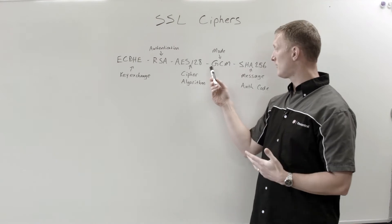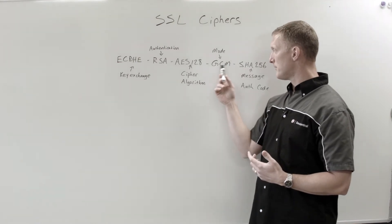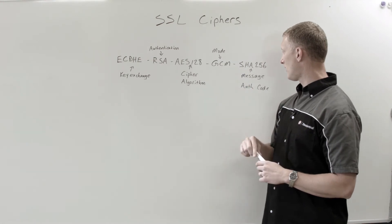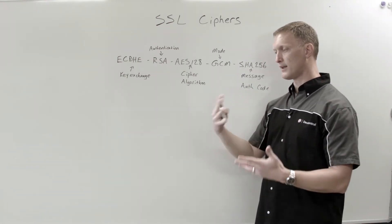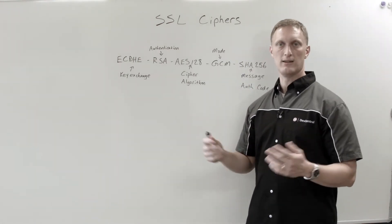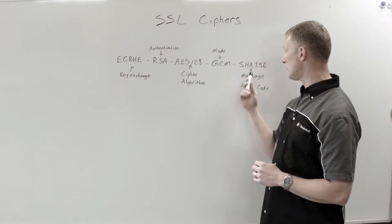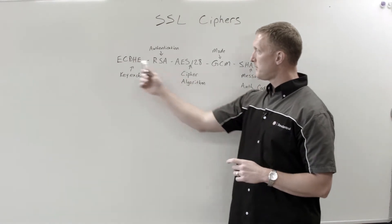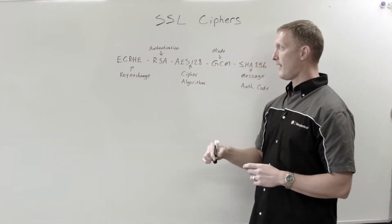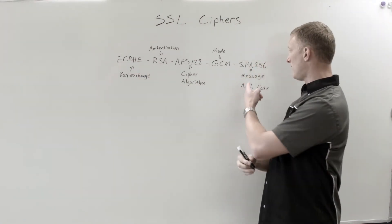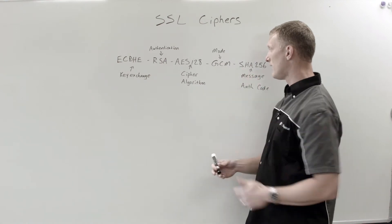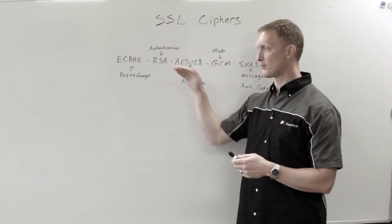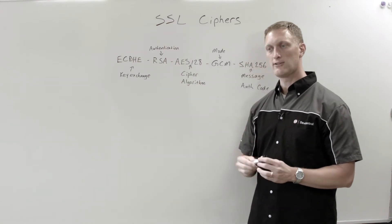Then there's a mode — 'GCM' is Galois/Counter Mode; the mode may also be listed in the cipher name. Then 'SHA256' — this is like a digital signature, the message authentication code. So that's just one example. You might have this same setup with SHA-128 or AES-256, and everything else stays the same. So there are a bunch of different combinations and options.